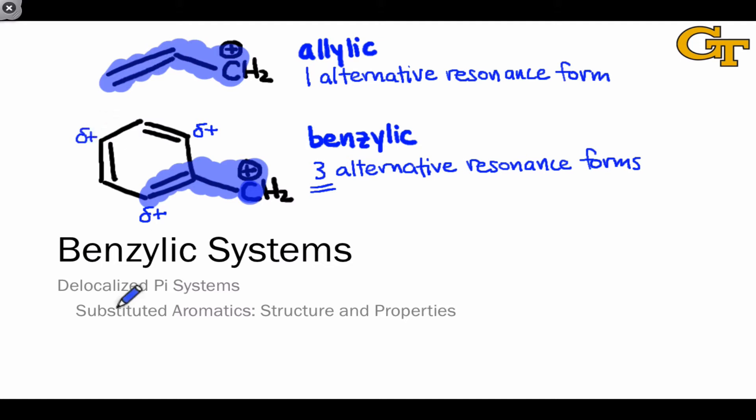I won't draw out the resonance structures explicitly, but you should take a moment to do this for the benzylic cation to convince yourself that the positive charge is delocalized over these carbons and not the meta positions. In the remainder of this video, we're going to look at some implications of the stability of benzylic pi systems in a manner analogous to what we did previously for the allylic pi system.